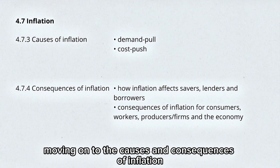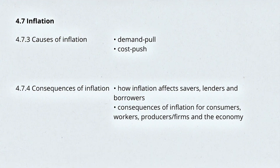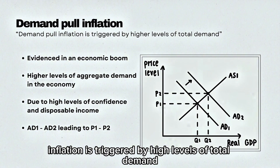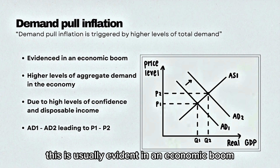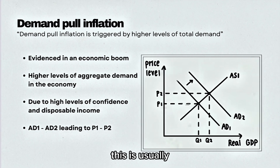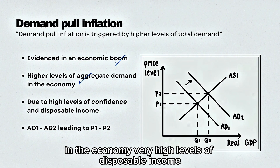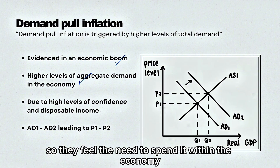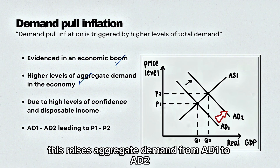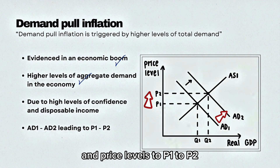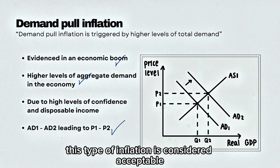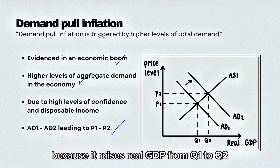Moving on to the causes and consequences of inflation. Demand-pull inflation is triggered by high levels of total demand, or aggregate demand, and is usually evident in an economic boom. This is because people have very high confidence in the economy and high levels of disposable income, so they feel the need to spend. This raises aggregate demand from AD1 to AD2 and price levels from P1 to P2. This type of inflation is considered acceptable because it raises real GDP from Q1 to Q2.